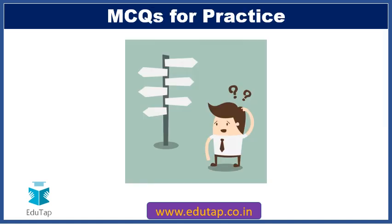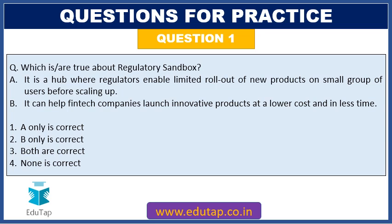Now let's take a look at some important MCQs based on this topic. Question 1: Which is true about regulatory sandbox? (A) It is a hub where regulators enable limited rollout of new products on a small group of users before scaling up. (B) It can help fintech companies launch innovative products at a lower cost and in less time. Options: only A is correct, only B is correct, both are correct, or none is correct. The answer is option 3 — both are correct.